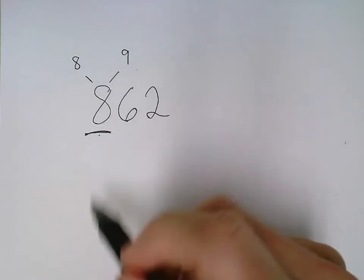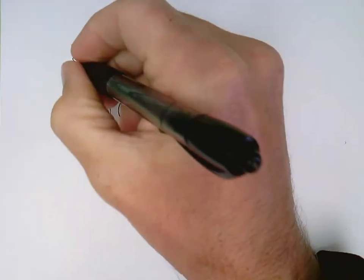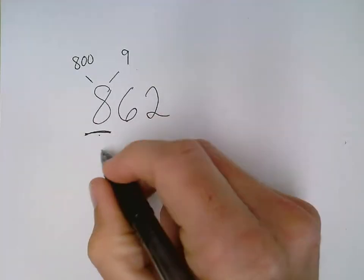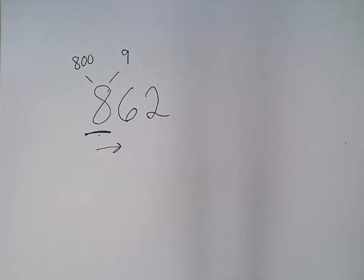If my underlined digit stays the same, my answer is going to be 800, because everything after the underlined digit turns into zeros.